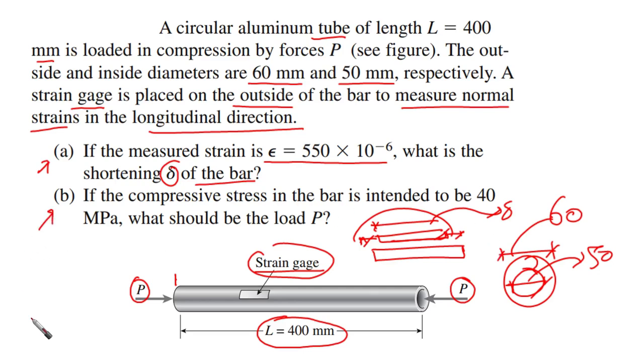The second requirement is: if the compressive stress in the bar is intended to be 40 megapascals, what should be the load P? If you want the compressive stress in this bar to be 40 megapascals, what should be the load P in this case?